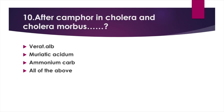After Camphor in cholera and cholera morbus: Option A. Veratrum album. Option B. Muriatic acid. Option C. Ammonium carb. Option D. All of the above. Answer: Option A. Veratrum album.